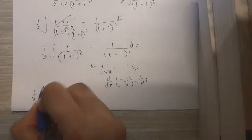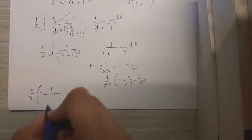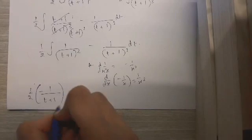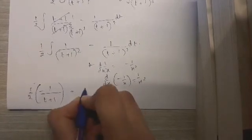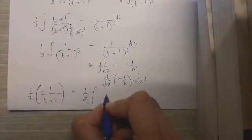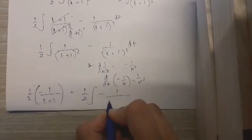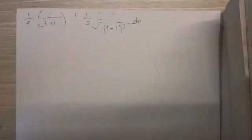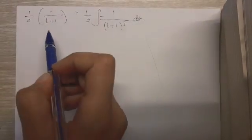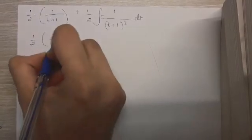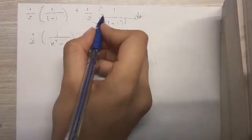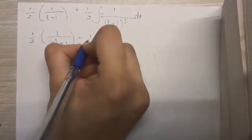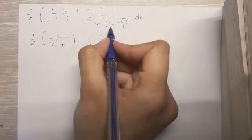Now for the second part, one-half times the integral of minus one upon t plus one the whole cube. Replacing t with x squared, we get one-half times one upon x squared plus one. Taking the minus sign outside, it becomes minus one-half, and since the denominator is a linear function t plus one, I can write t plus one raised to minus three.